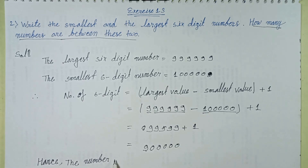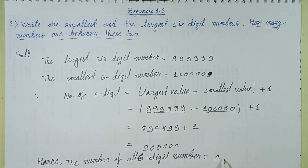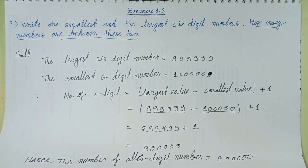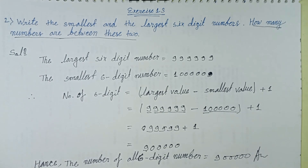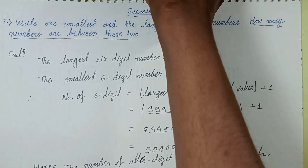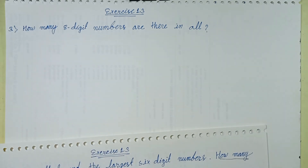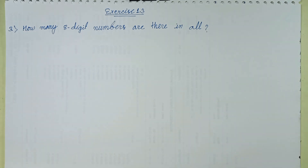Hence, the total number of all six-digit numbers is 900000. My answer is: total nine lakh six-digit numbers. Next episode will cover the solution of Question Number 3. See you in the next episode, thanks for watching.